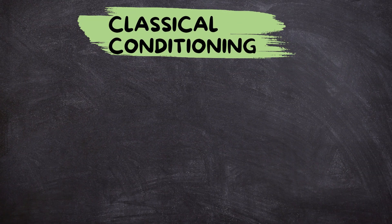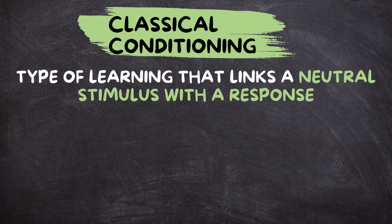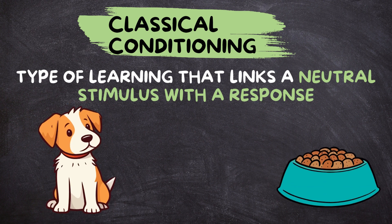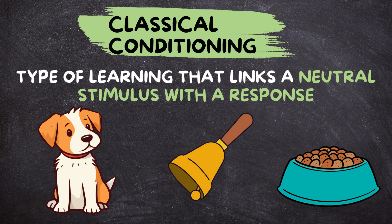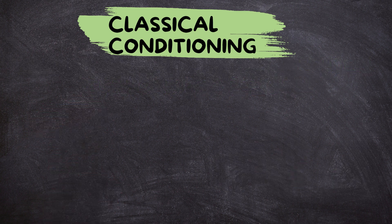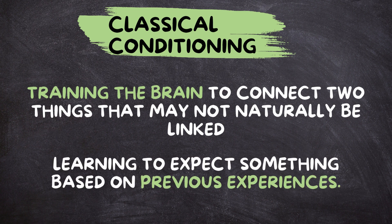What is classical conditioning? Classical conditioning is a type of learning that links a neutral stimulus with a response. Imagine a dog who always gets excited when it sees a food bowl. In classical conditioning, a bell could be rung every time the dog is fed. After a while, the dog associates the bell with food, and just ringing the bell makes the dog excited, even if there's no food in sight. In simpler terms, classical conditioning is like training the brain to connect two things that may not naturally be linked. It's about learning to expect something based on previous experiences.